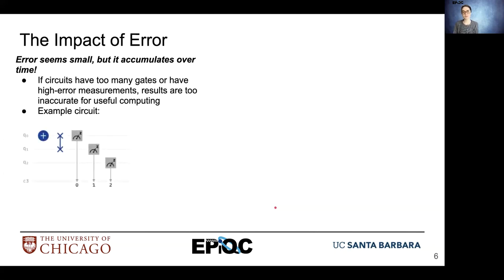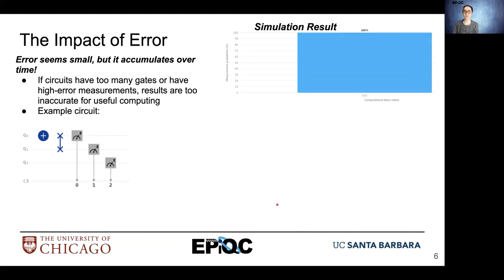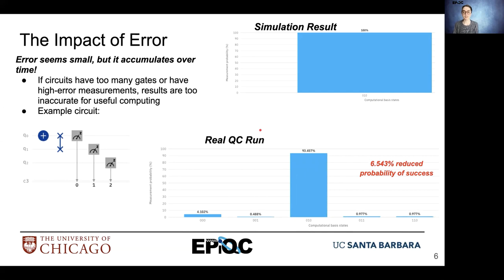In this example circuit, we can see the differences between a simulation and a real quantum machine run. We have one NOT gate followed by a SWAP gate and three measurements. In the simulation, we have a 100% chance of observing the correct outcome — the |010⟩ state — which we expect because a |0⟩ turns into a |1⟩, swapping the information between the first and second qubit, resulting in an expected measurement of |010⟩. On the quantum machine run, however, we have a 6.543% reduced probability of success due to the different sources of error encountered on a real machine. This is a very small circuit and we still had a reduced performance of about 6.5%, so we can see how that can grow significantly as circuits increase in size.